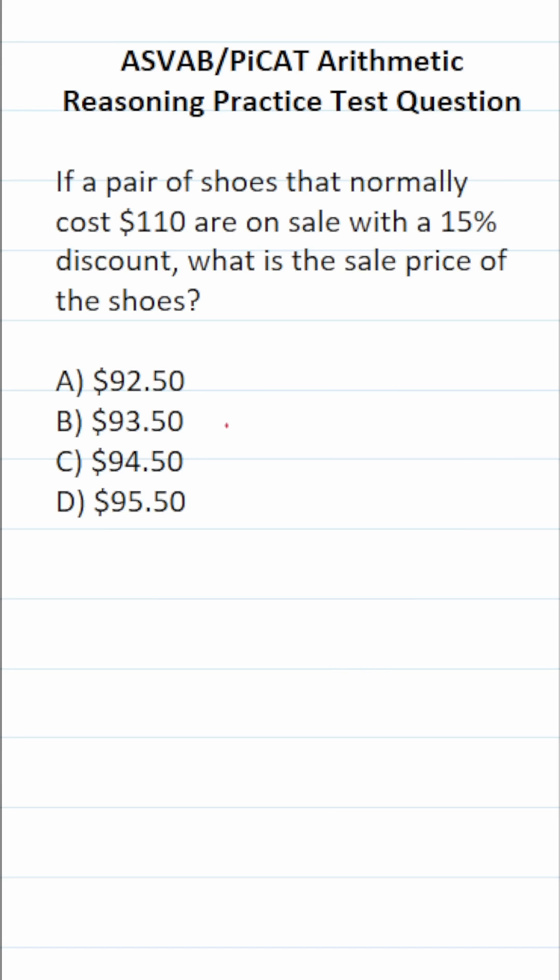This is a type of question that frequently appears in both the ASVAB and PiCAT. To calculate sale price, it's fairly simple. You take the original price, and from that, you subtract the original price times the discount amount.